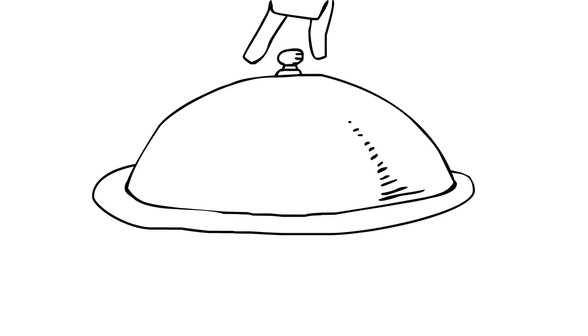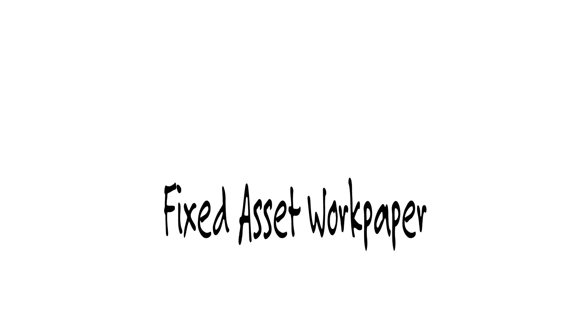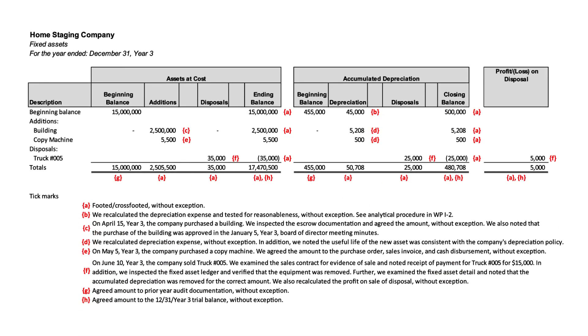As with the previous one, we're once again going to look at a work paper. We're going to go through this one just a little bit differently. Instead of working left to right, this time we're actually going to work our way through the list of tick marks and see where they apply on the page.